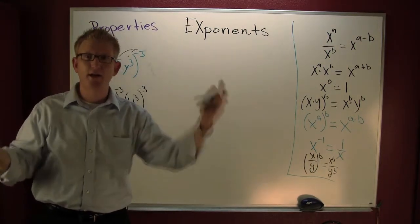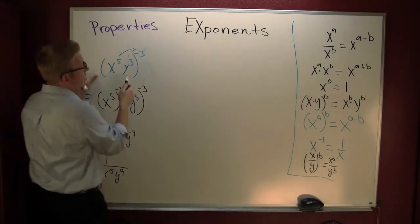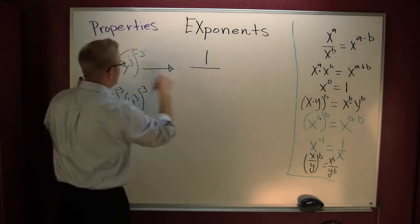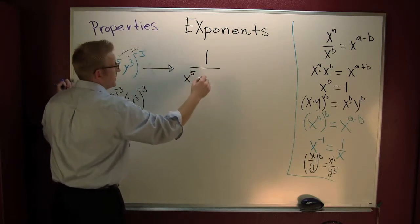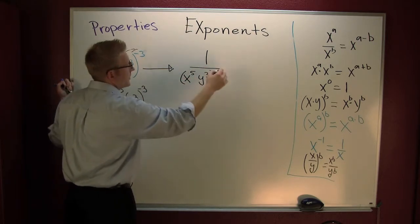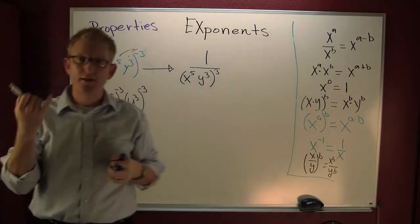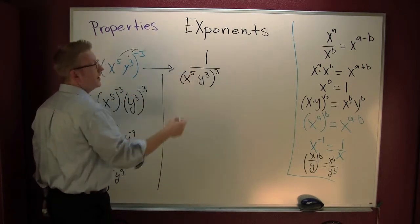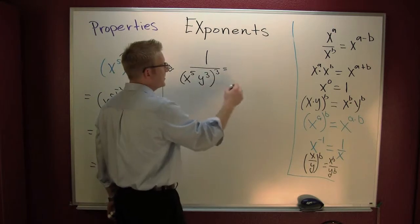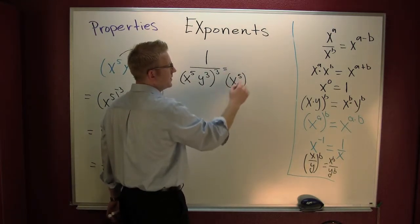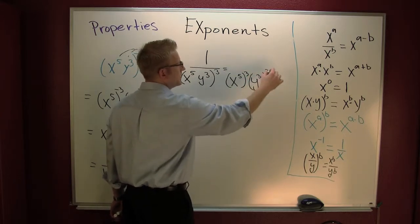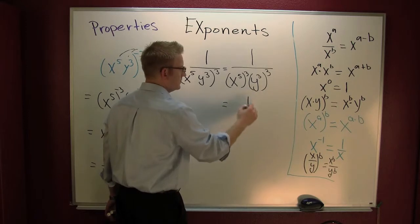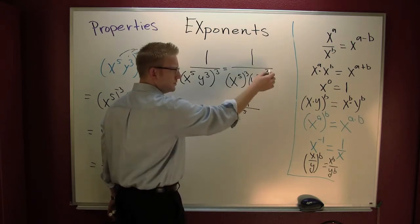I'm gonna show you another way. What if we had taken care of the minus sign first? We take the reciprocal: that's one over everything on the inside, x to the fifth y to the third, all to the third power. Then this becomes x to the fifth to the third over y to the third to the third in the denominator — giving x to the fifteen over y to the nine.